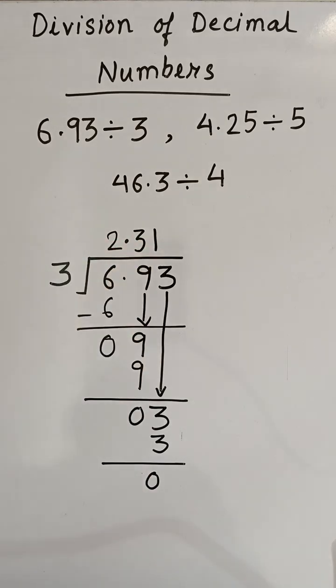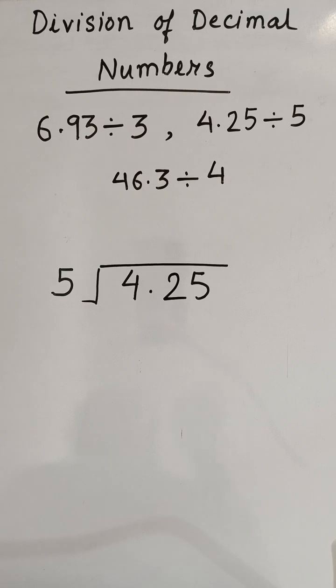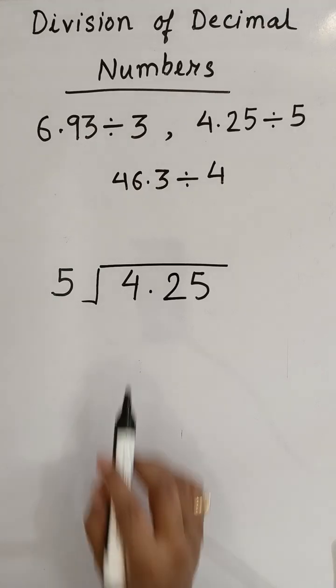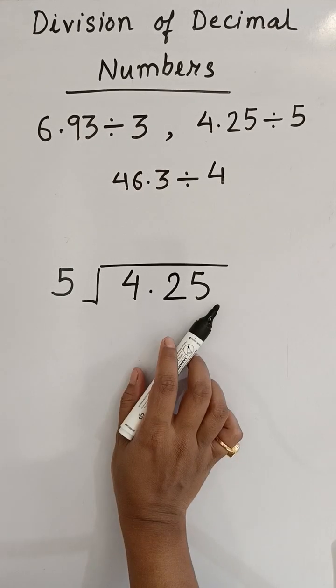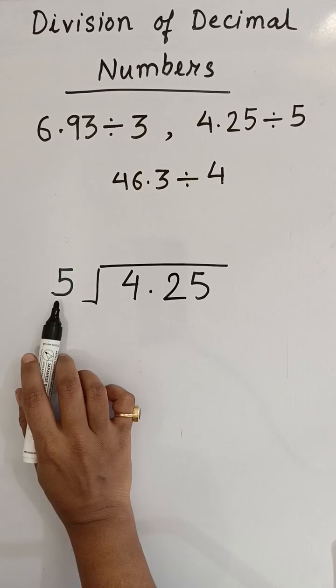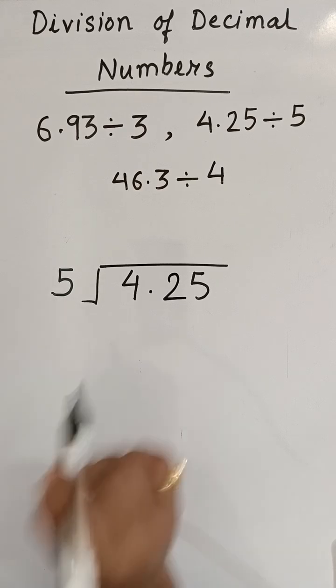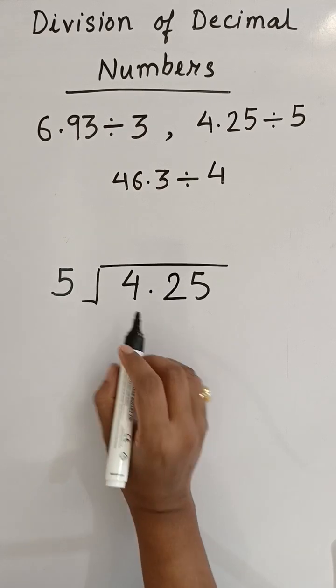So for this division the answer is 2.31. Now let us do the second one: divide 4.25 by 5.